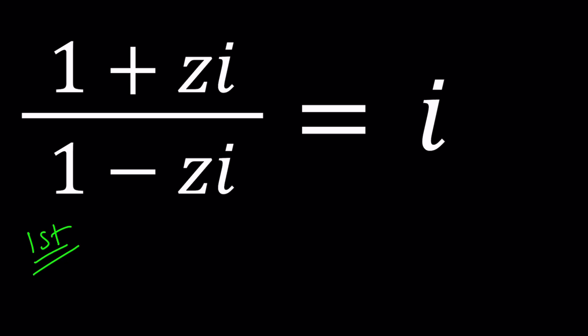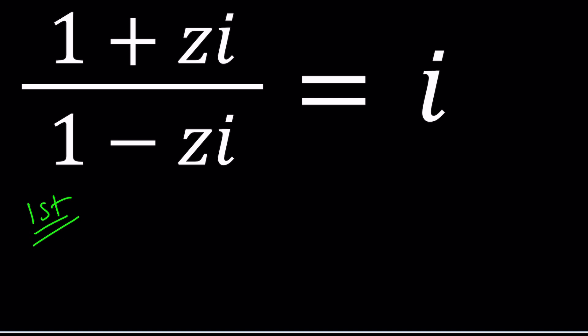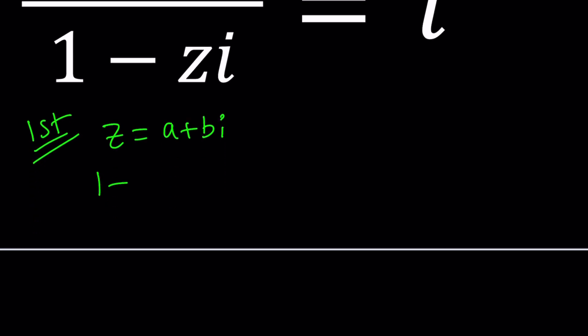For our first method we're going to call z equals a plus bi. There are two reasons behind this. First reason it's the name of this channel. The second reason is it solves the problem. So let's replace z with a plus bi and see what happens. 1 plus (a + bi) times i divided by 1 minus (a + bi) times i equals i.